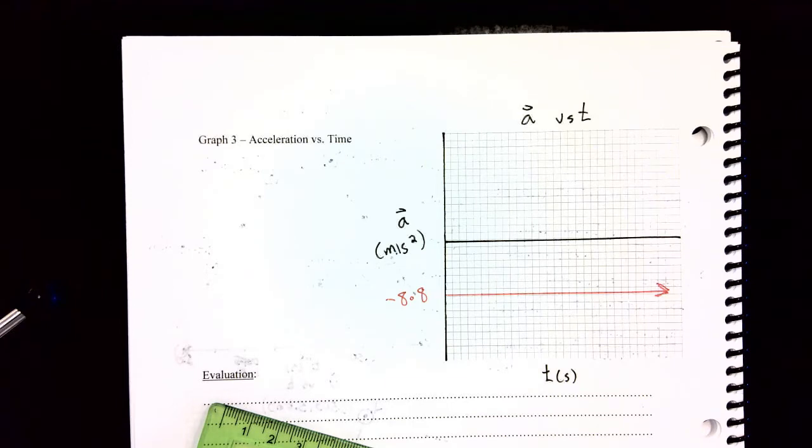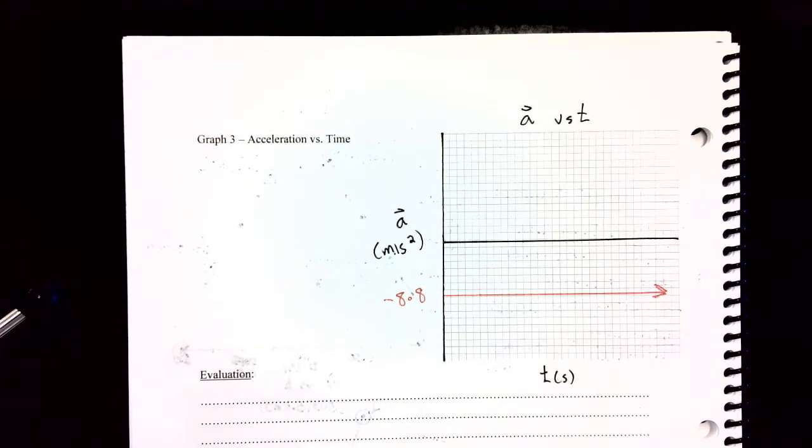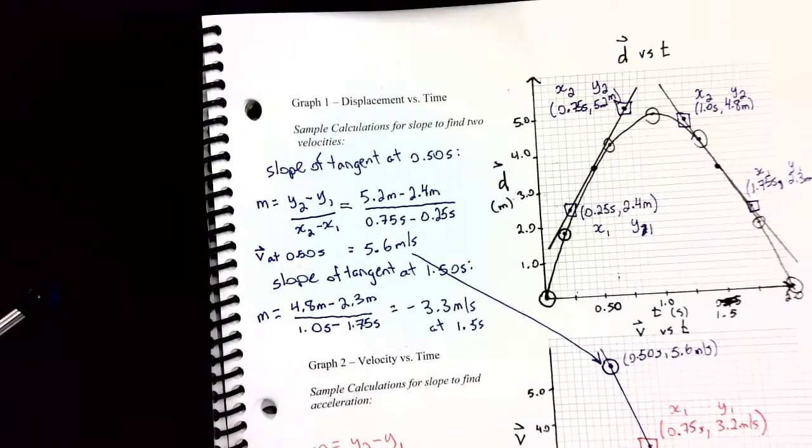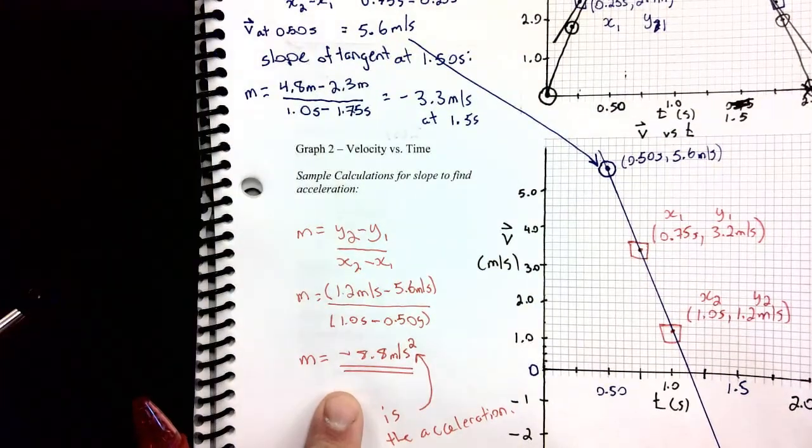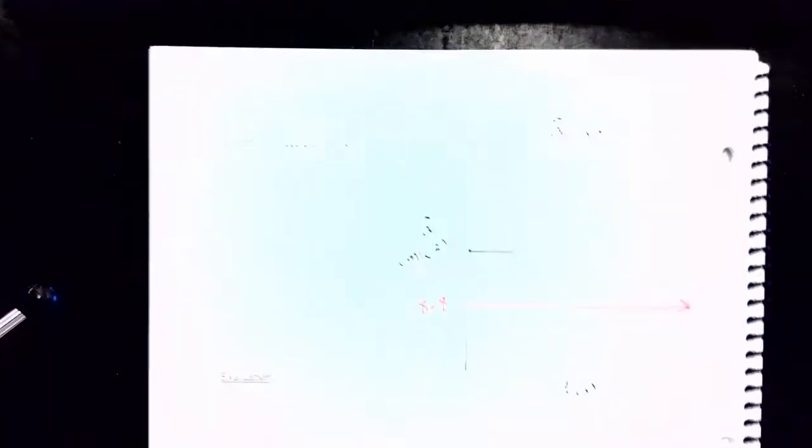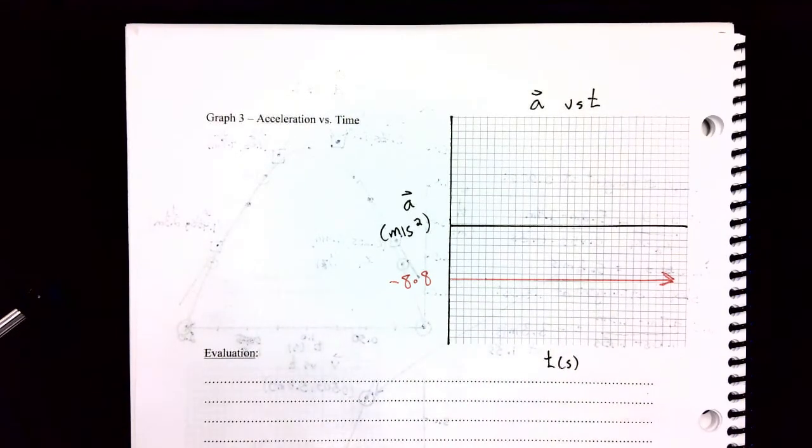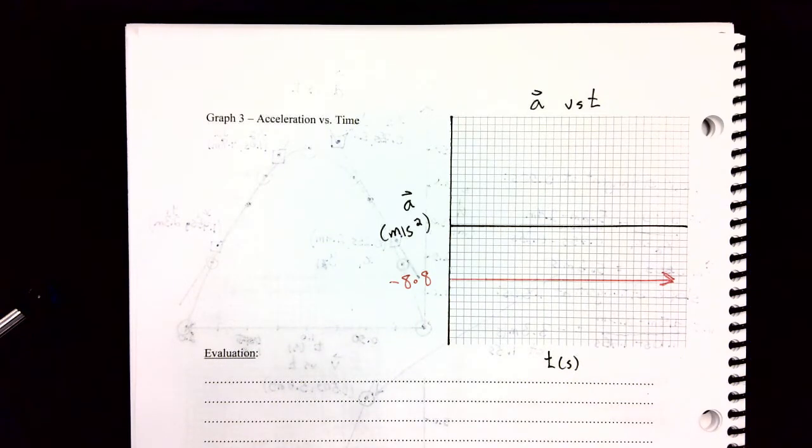All I had to do for my acceleration time graph was take my slope of the velocity time graph, take that slope, and just, since the slope of the velocity time graph is the acceleration, graph that up. So these are the steps we'll use to take a displacement time graph and turn it into a velocity time graph and an acceleration time graph.